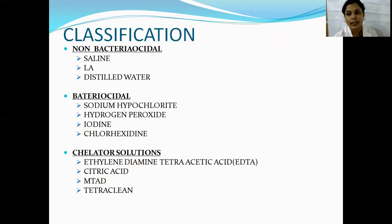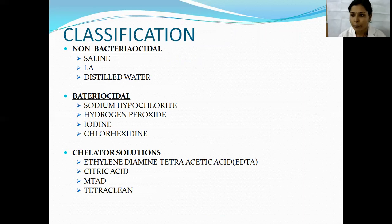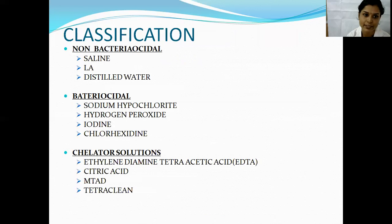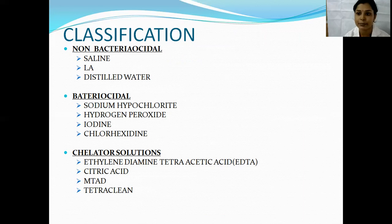Coming to the classification of root canal irrigants: root canal irrigants can be classified as non-bactericidal, bactericidal, chelating solutions, herbal agents, as well as recent advances. Non-bactericidal irrigant solutions do not have any antibacterial activity; as the name suggests, they include saline, local anesthesia, distilled water, etc.